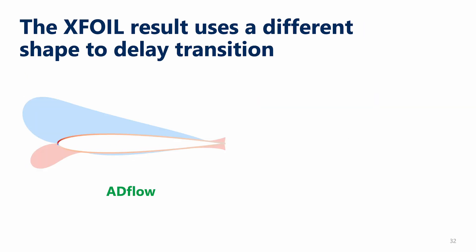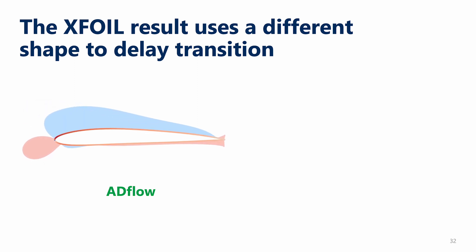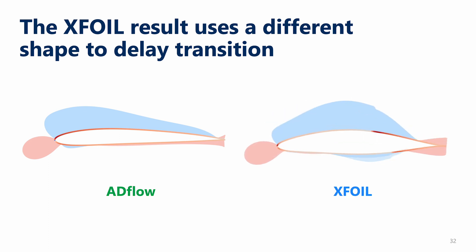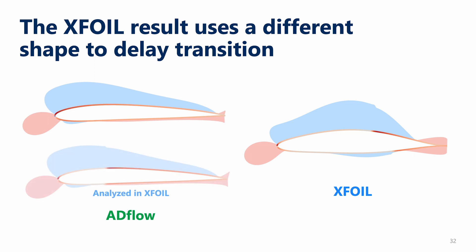Let's first take a look at a single optimization in the two solvers to see the difference in behavior. ADFLOW, the RANS solver, smooths out the pressure distribution and makes a thin airfoil. XFOIL actually does something very different — it adds thickness to the airfoil and moves the max T/C further aft. This allows for a more favorable pressure gradient for the first part of the airfoil, which delays transition and reduces the viscous drag. If we analyze the result from the ADFLOW optimization in XFOIL, we can see that the transition location is much further forward on that airfoil compared to the one optimized with XFOIL.